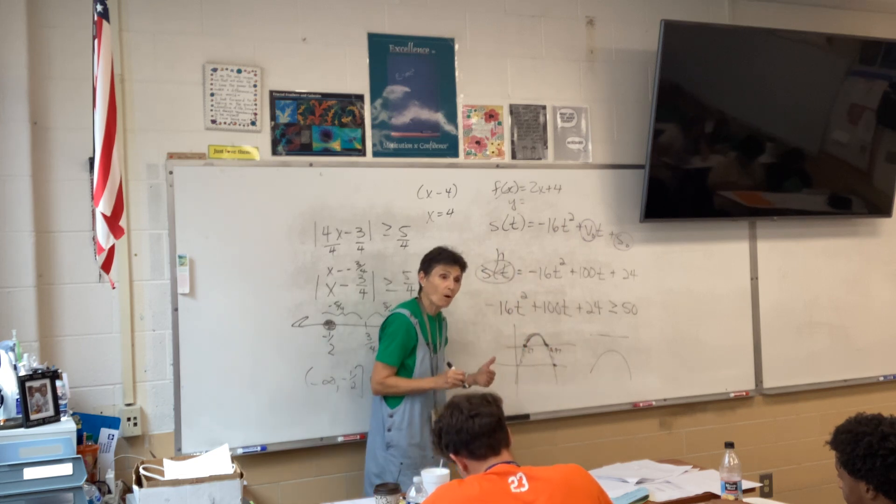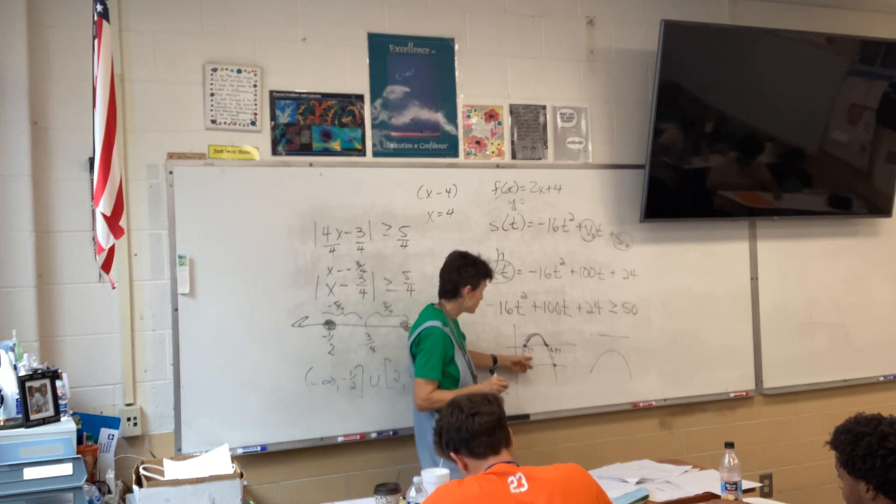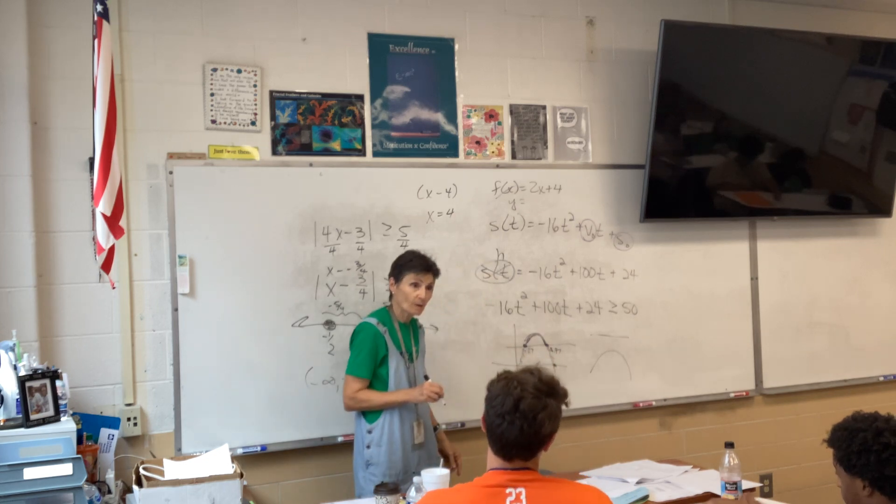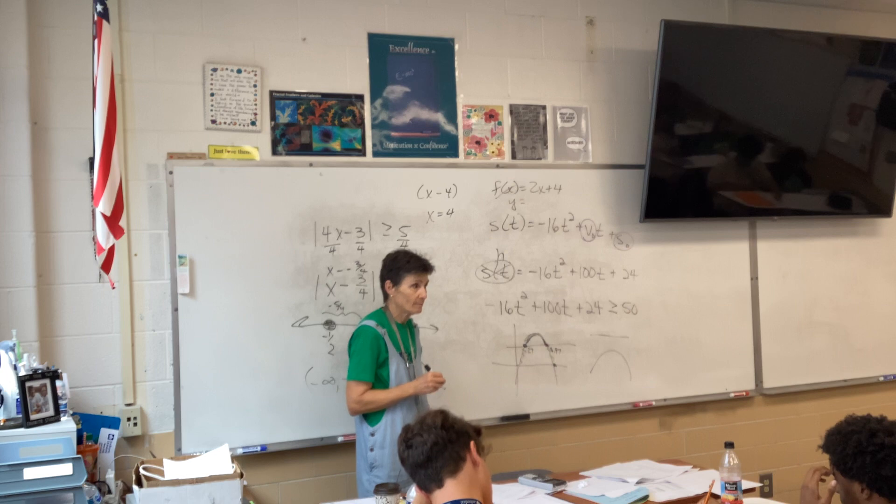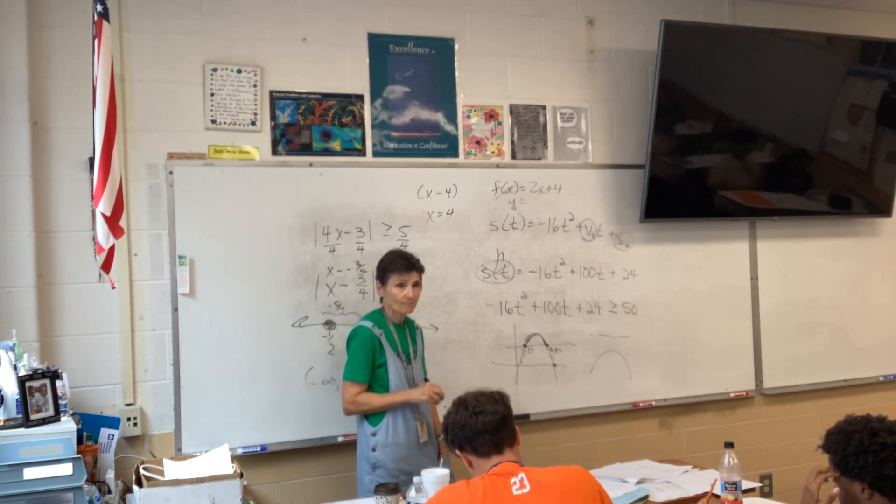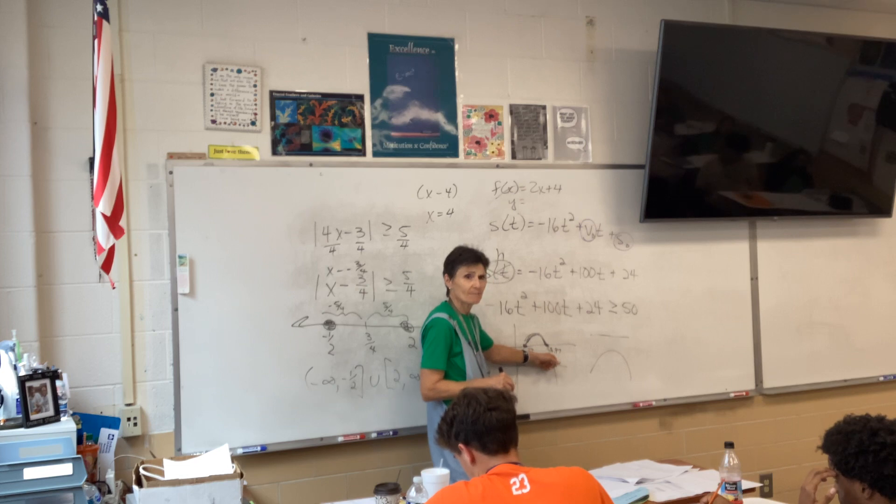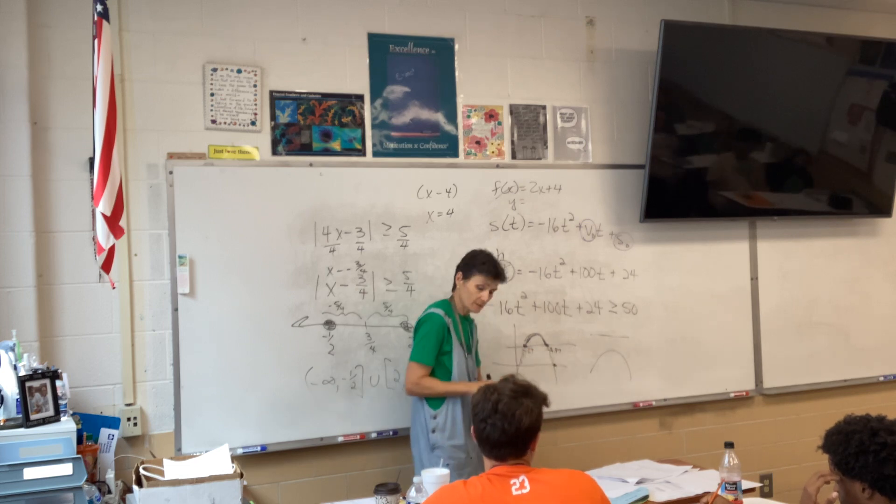And I said, okay, then you're going to work on that and find out where they intersect. So your answer, what were these two numbers? Were they intersecting? I have one. 0.27. And what's the other one? 5.97. So when is the ball at least 50 feet above the ground between these two times, right?